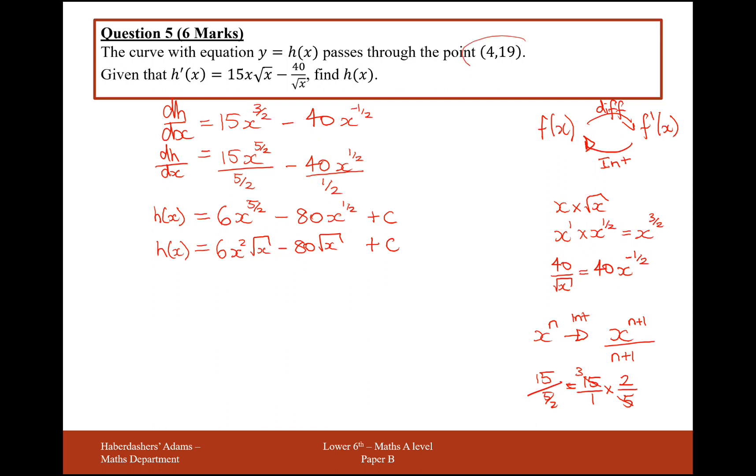Okay. So now what we have to do is, probably using this 4, 19 value, find out the value of C. So when we plug in, this is referring to, when you plug in h of 4, you get the value 19 out. So that's what we're going to do here. h of 4 is 19, and this is going to equal 6 times 4 squared times the square root of 4, take away 80 times the square root of 4 plus C. So this here is going to give us, 6 times 8 is 48, double 48, because it's the square root of 4, which is 2, that'll give you 96. Take away 80 times 2, which is 160. Add on C.